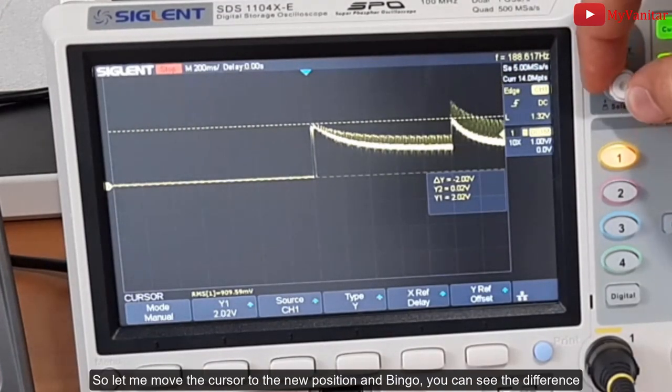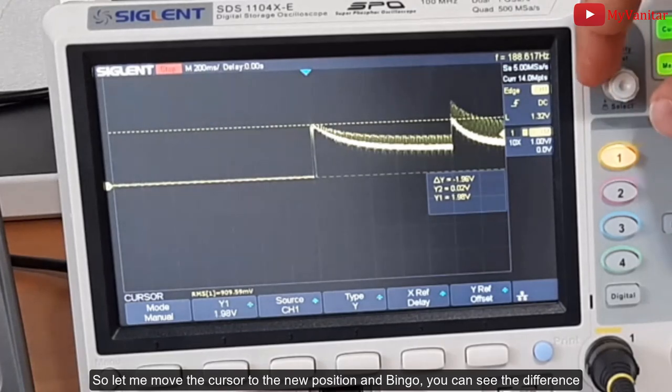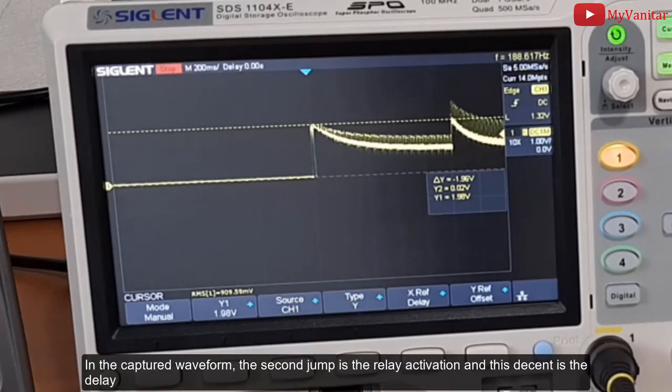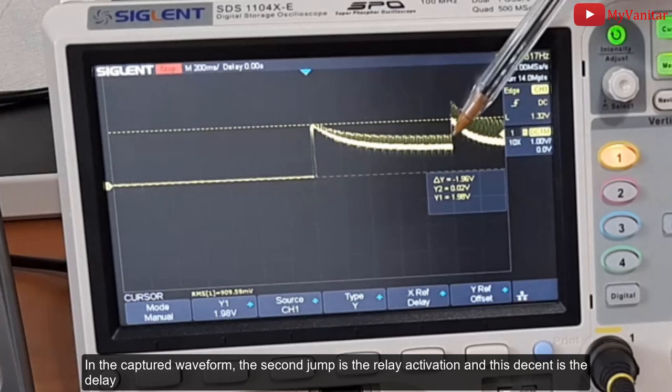Bob's your uncle! Do you see the previous cursor position? Now I'm gonna move the cursor to the new top. So let me move the cursor to the new position and bingo! You can see the difference - 1.9 volts. So this is the effect of the soft starter in the captured waveform. The second jump is the relay activation and